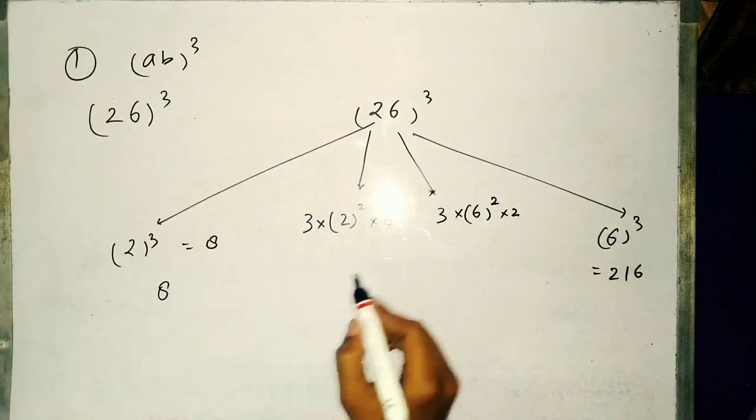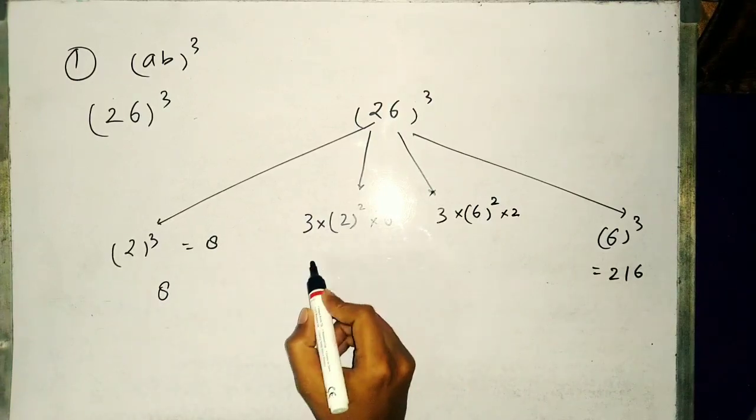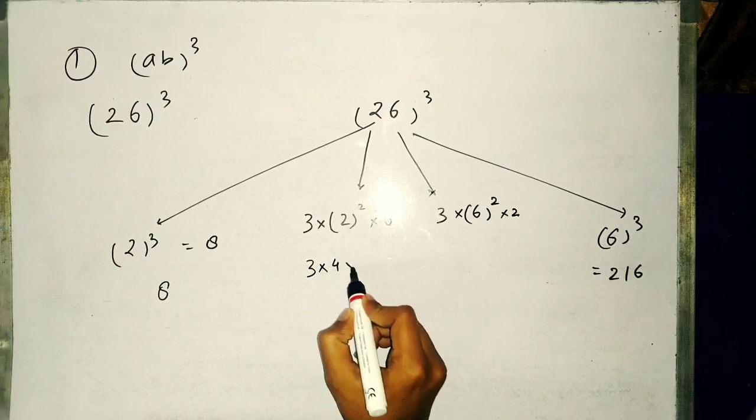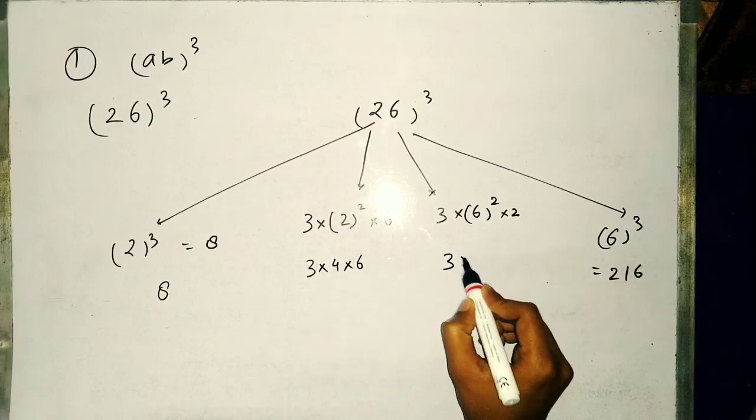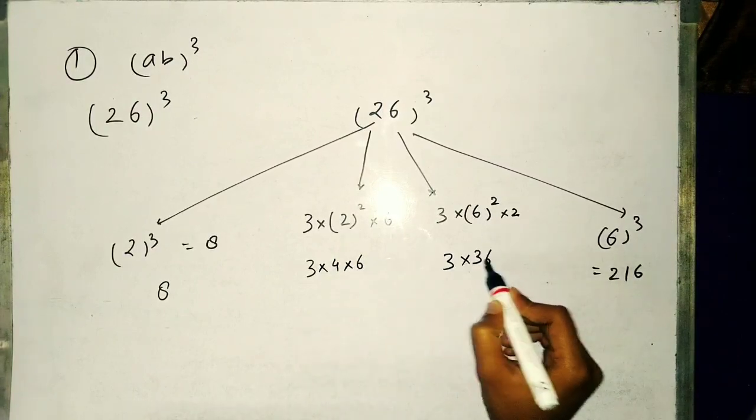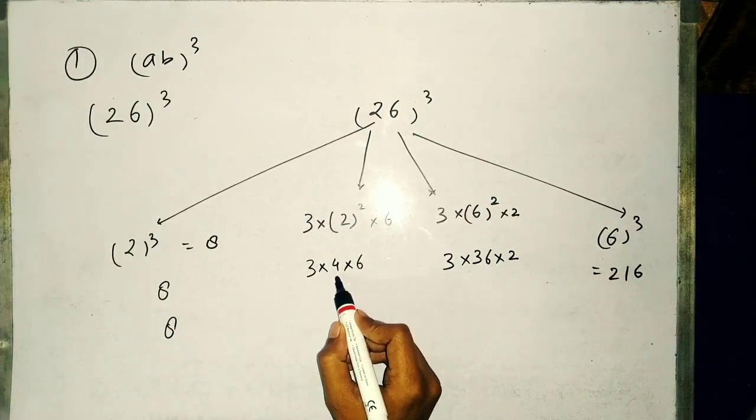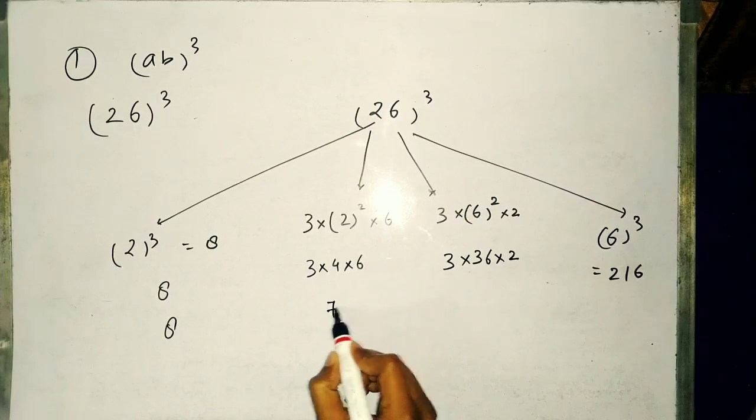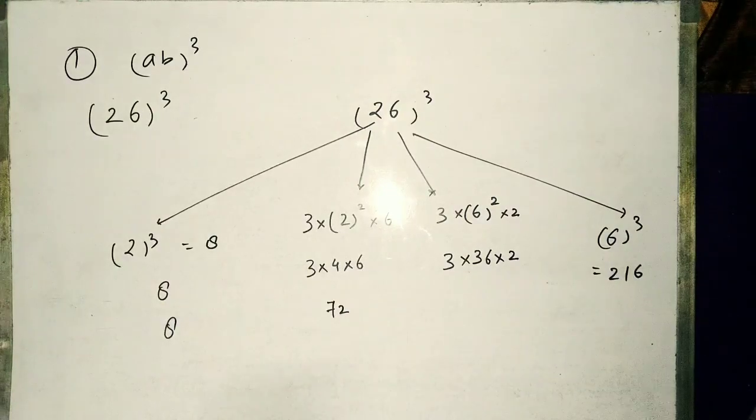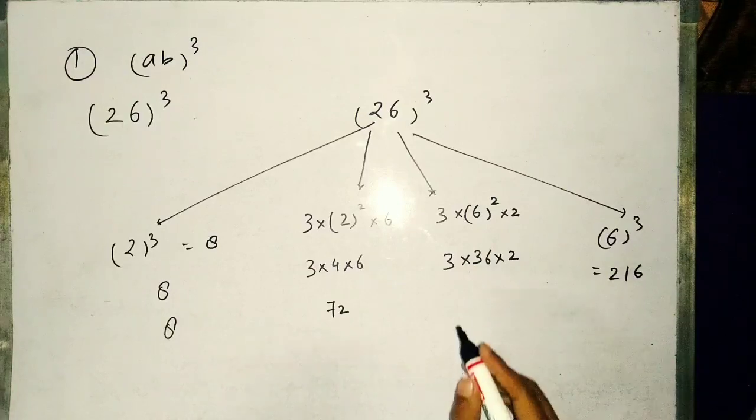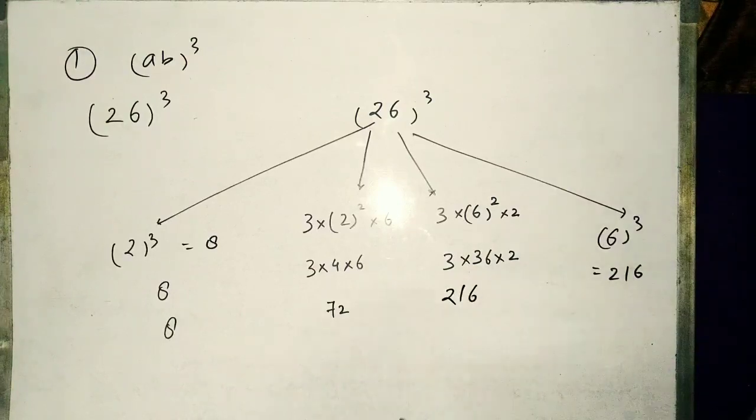After multiplication, 3 into 4 into 6 and similarly 3 into 36 into 2. We will write 3, 4, 12, 6, 72, and 36 into 6 which is 216.